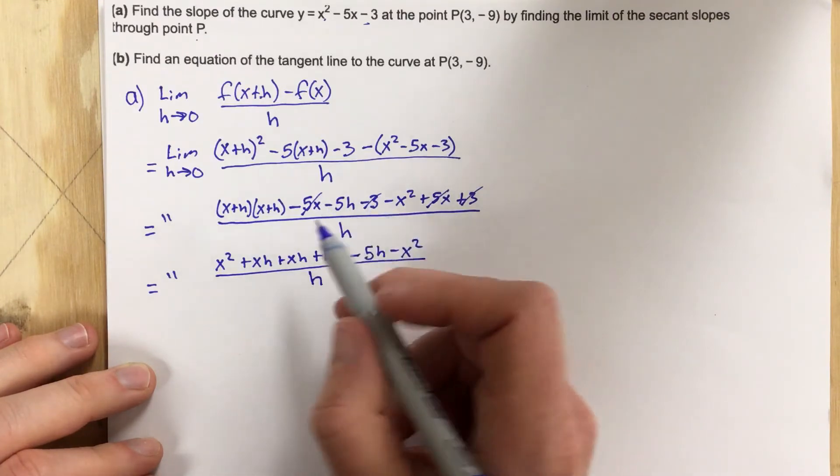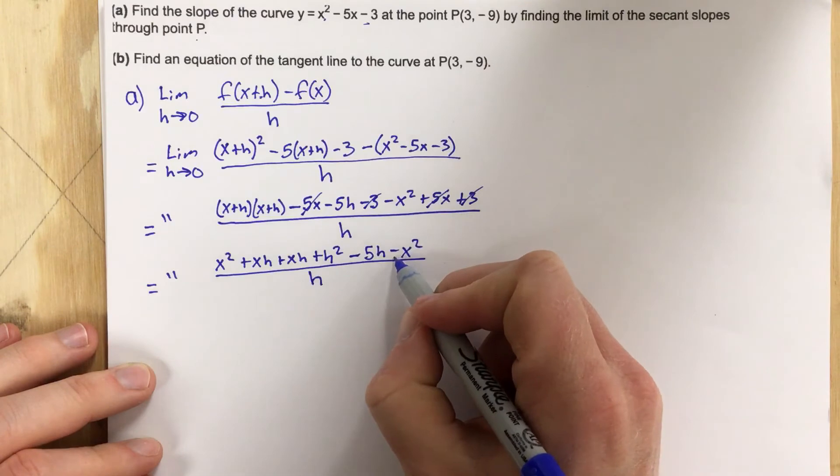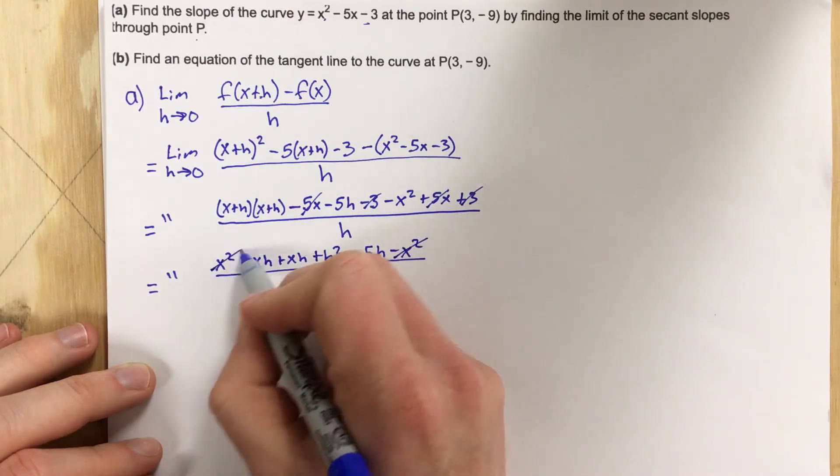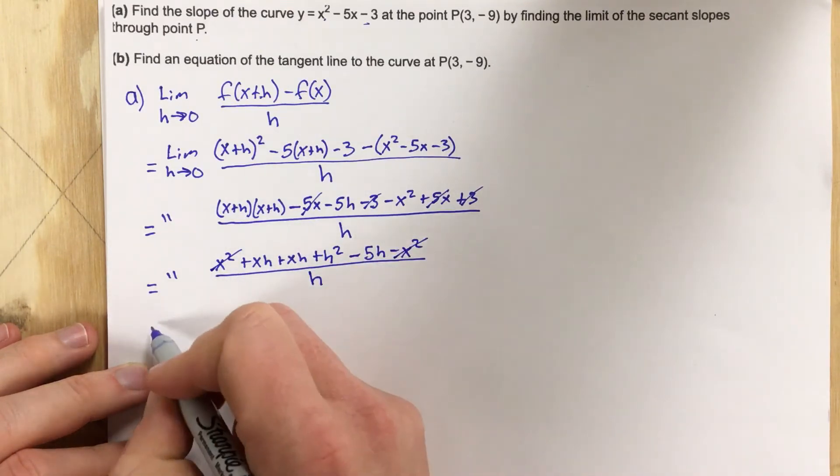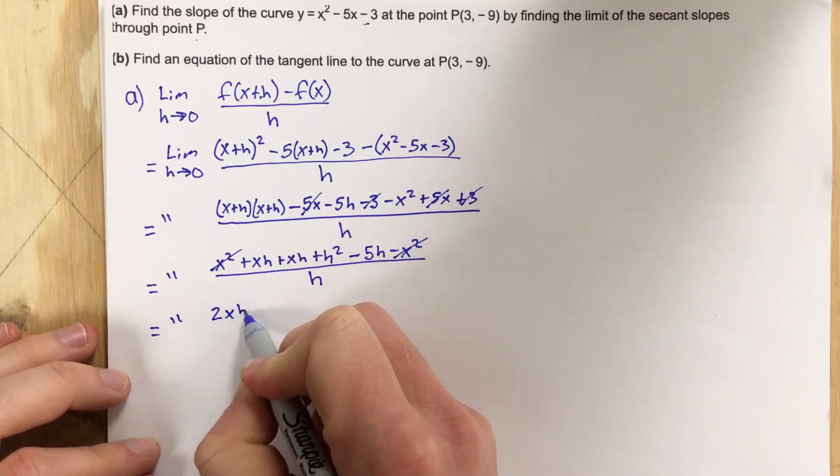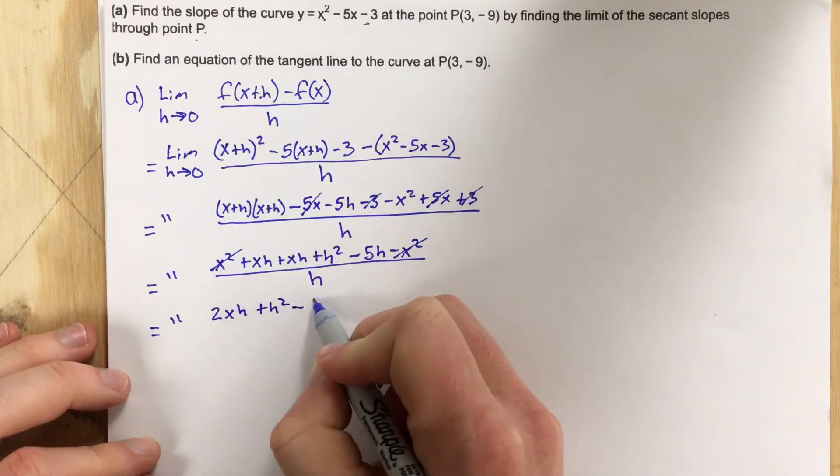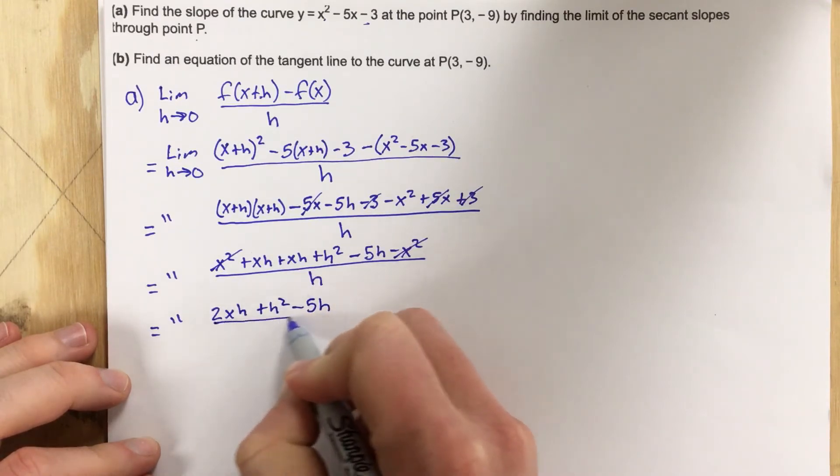Now I can combine some stuff together. This will be 2xh and this -x squared cancels this x squared. So I end up with 2xh plus h squared minus 5h all over h.